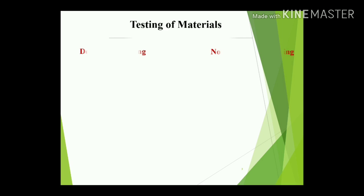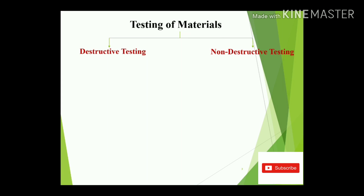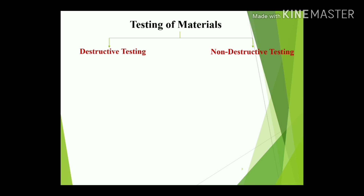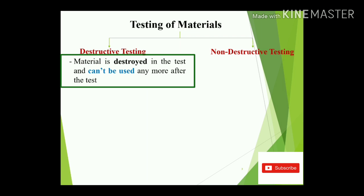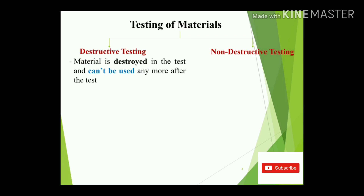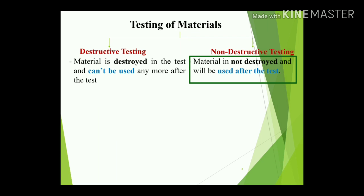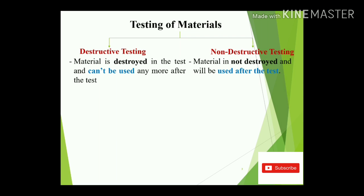Material testing is divided into two categories: destructive testing and non-destructive testing. In destructive testing, the material is destroyed during the test and cannot be used afterward, making it considered wastage. In non-destructive testing, the material is not destroyed — you can evaluate and identify different properties, and the material can still be used after the test, providing 100% assurance regarding performance and properties.